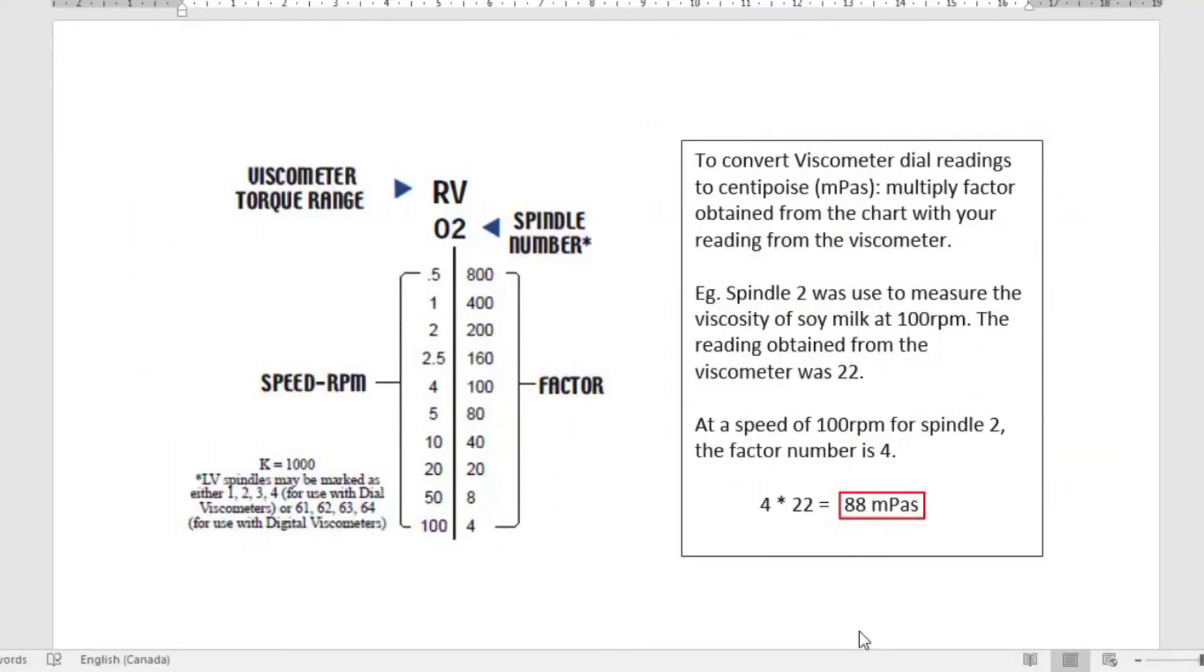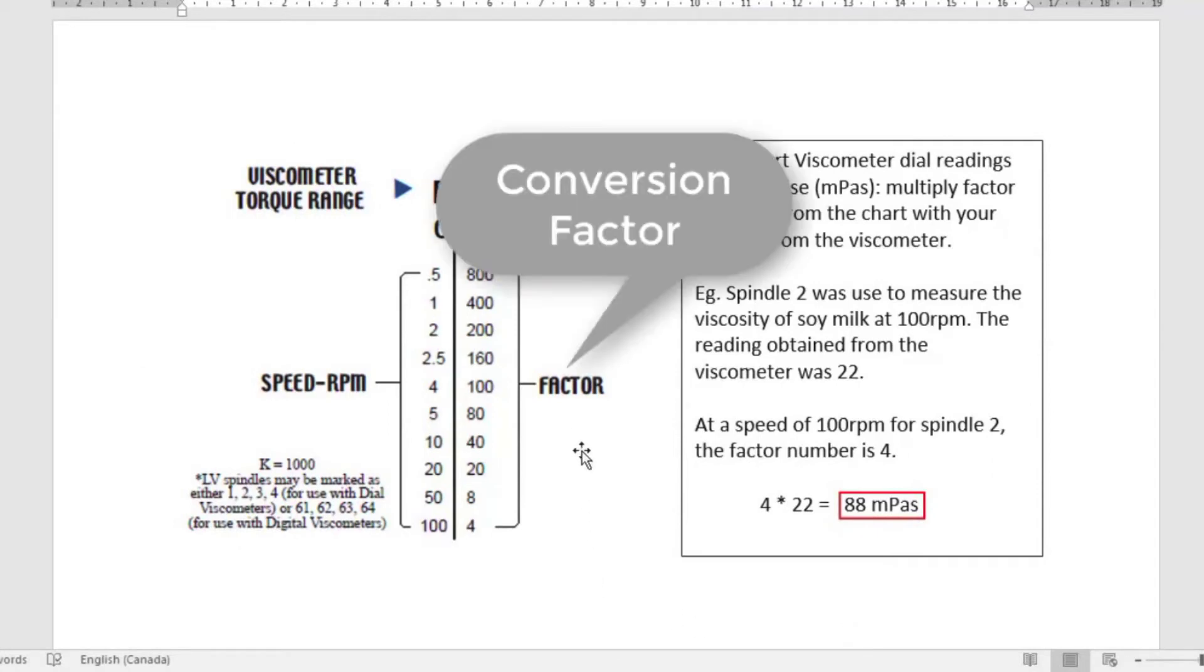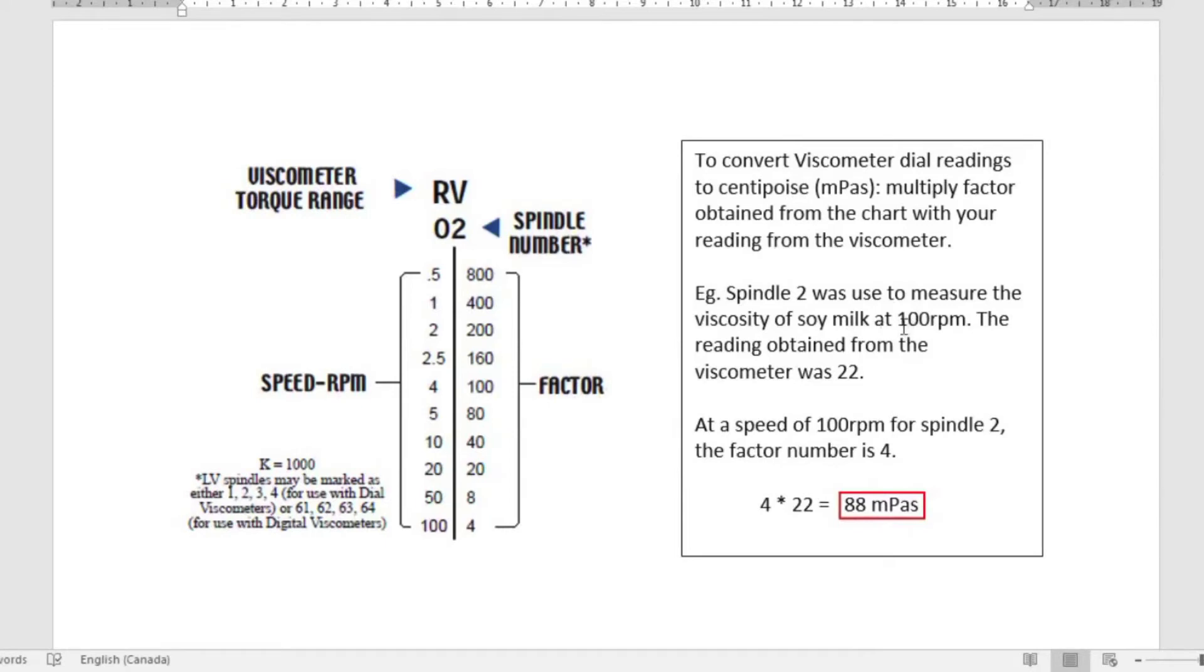Now that you have selected the correct conversion chart, the conversion factor can then be determined based on the speed of the viscometer during sample reading. In this example, a speed of 100 rpm was used, so its corresponding correction factor will be 4.